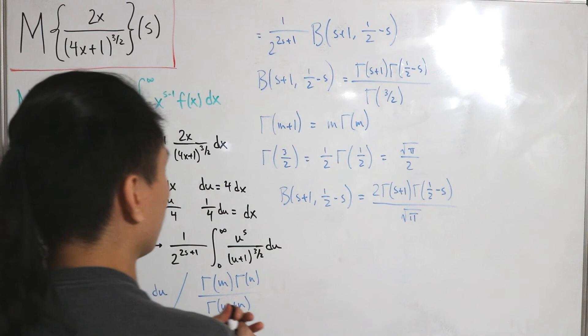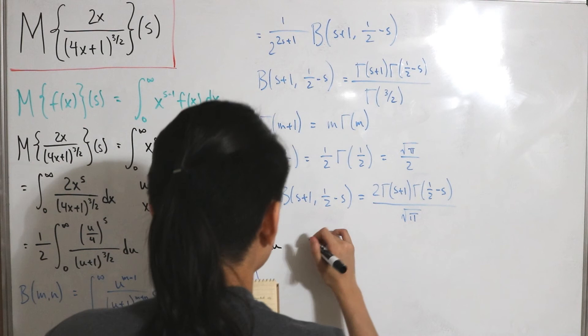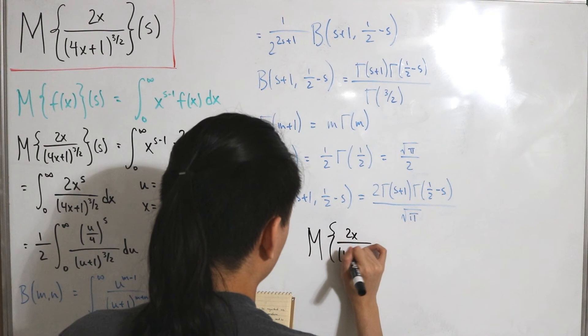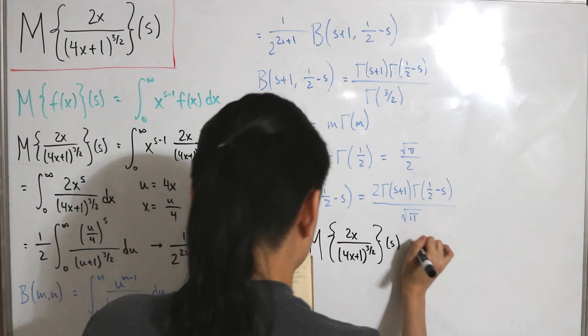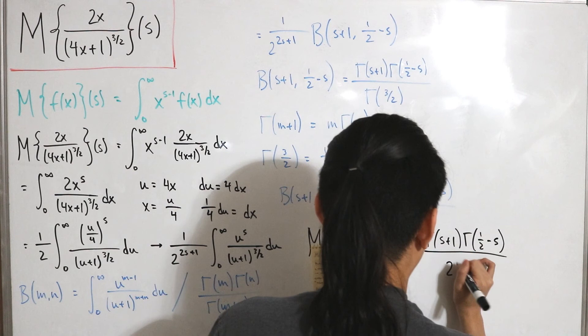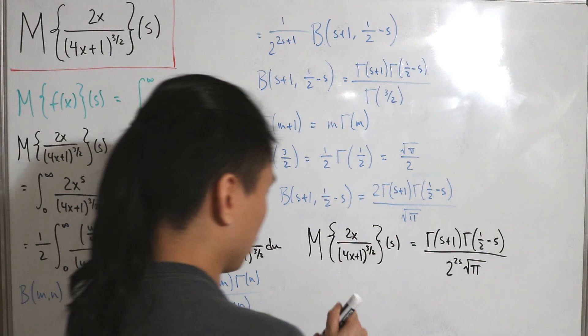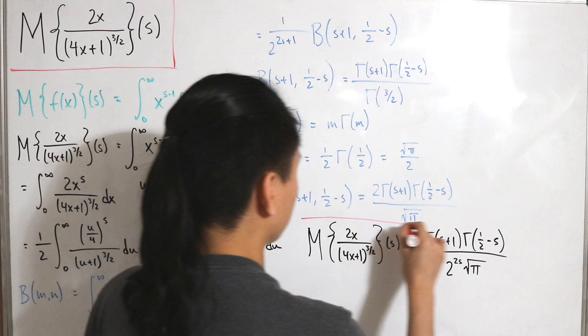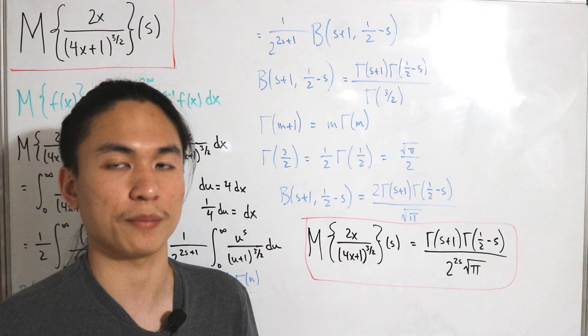We just multiply this by 1 divided by 2 to the power (2s + 1). So the final Mellin transform of 2x over (4x + 1) to the power 3/2, with input s, equals gamma(s + 1) times gamma(1/2 minus s), divided by 2 to the power 2s times the square root of pi. And that's the closed form — found by definition and using properties of the beta and gamma functions. Pretty cool!